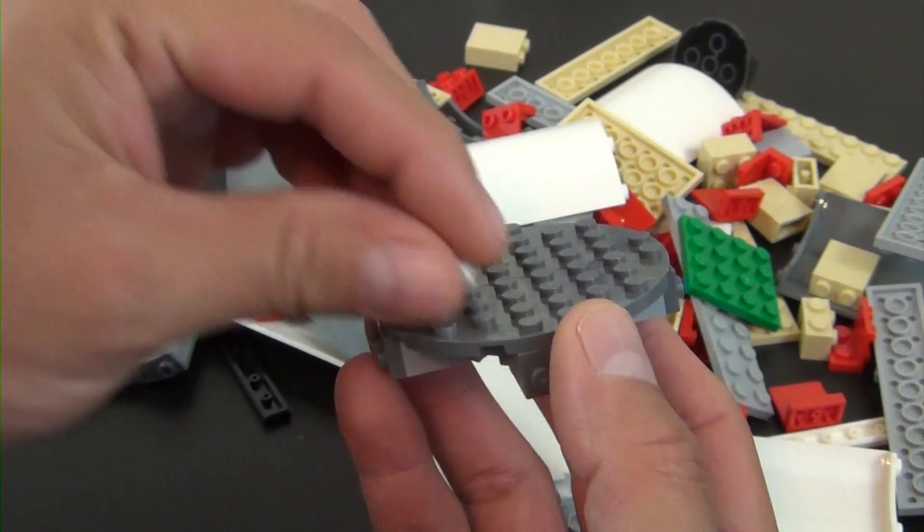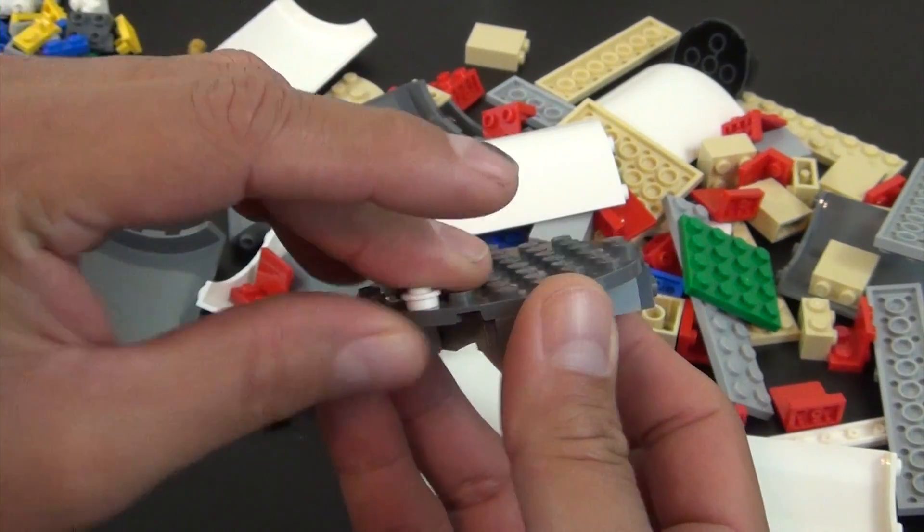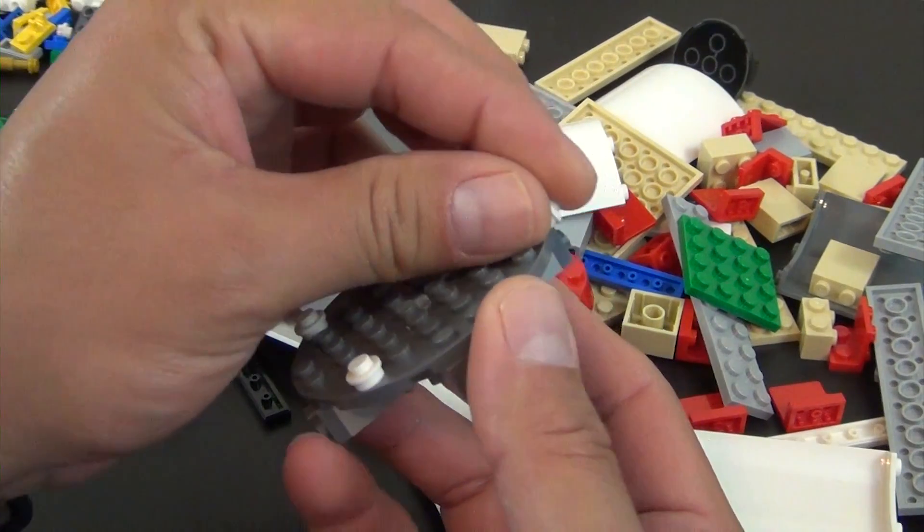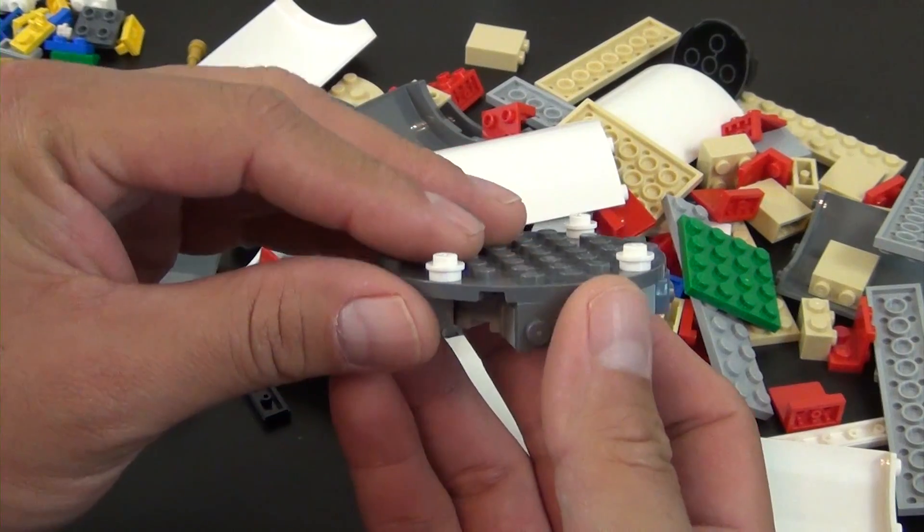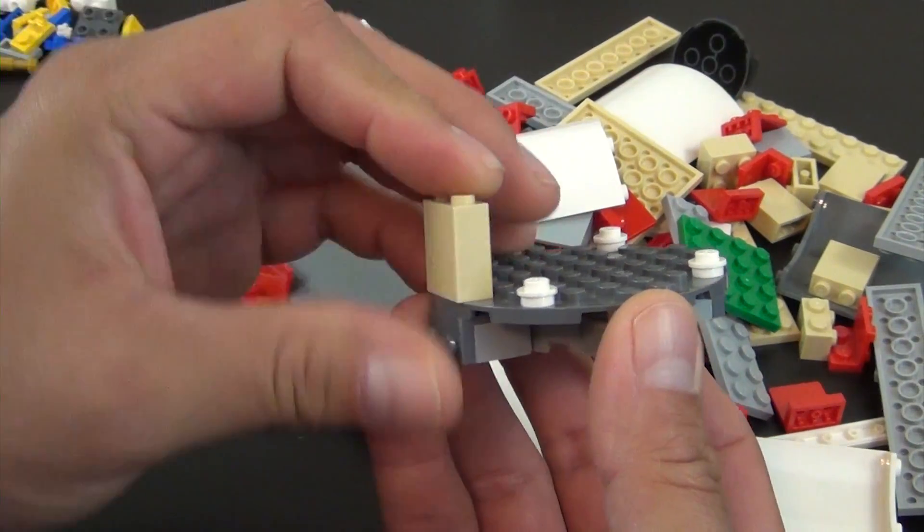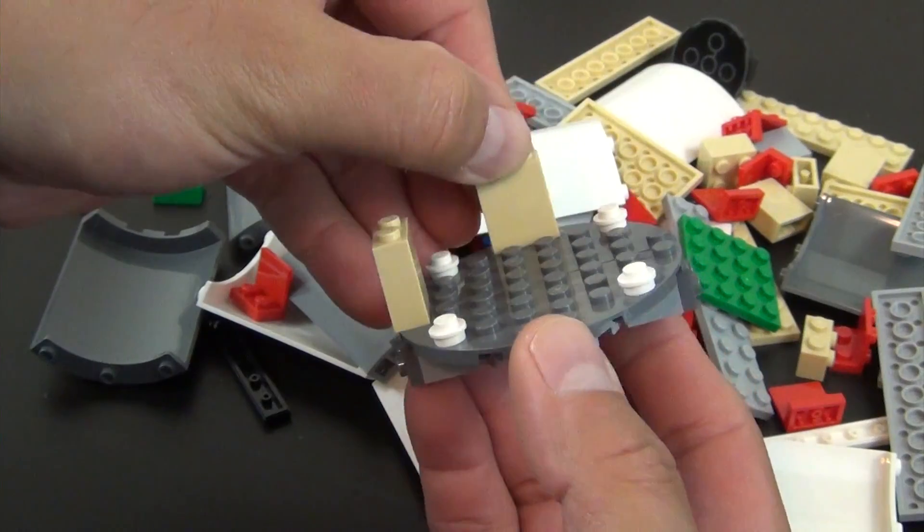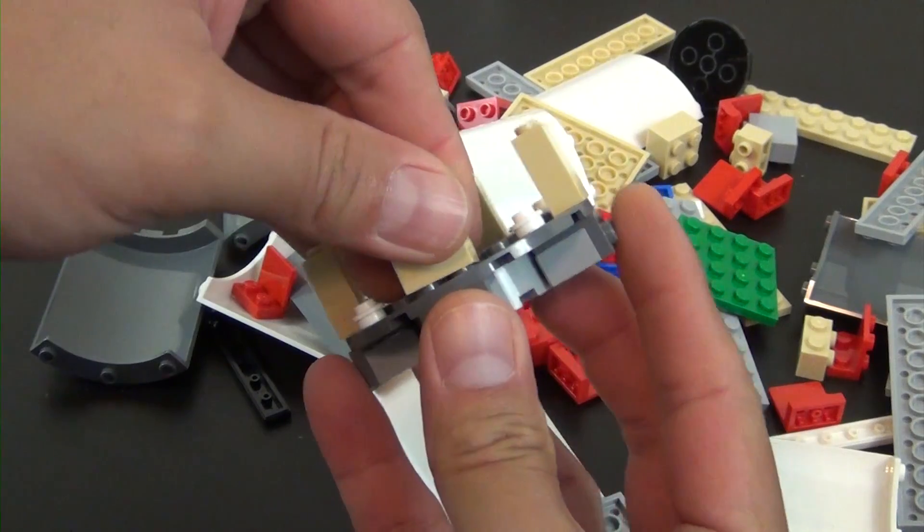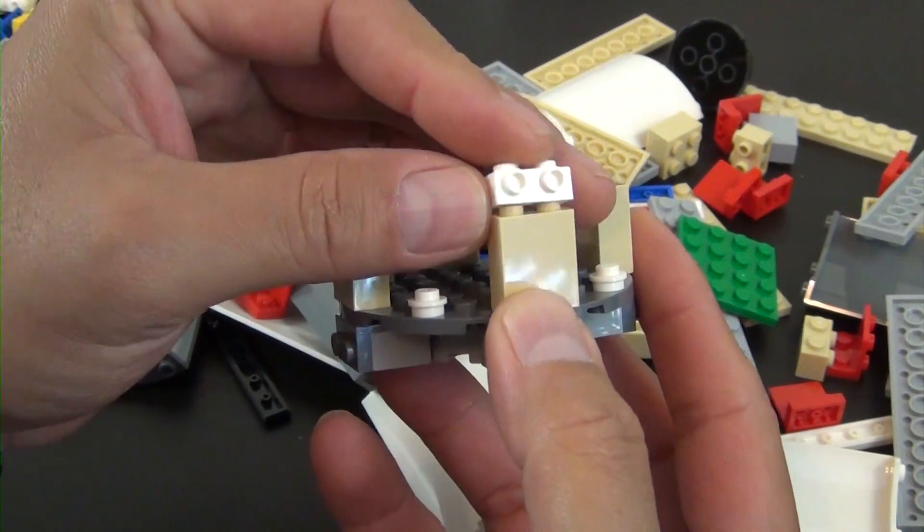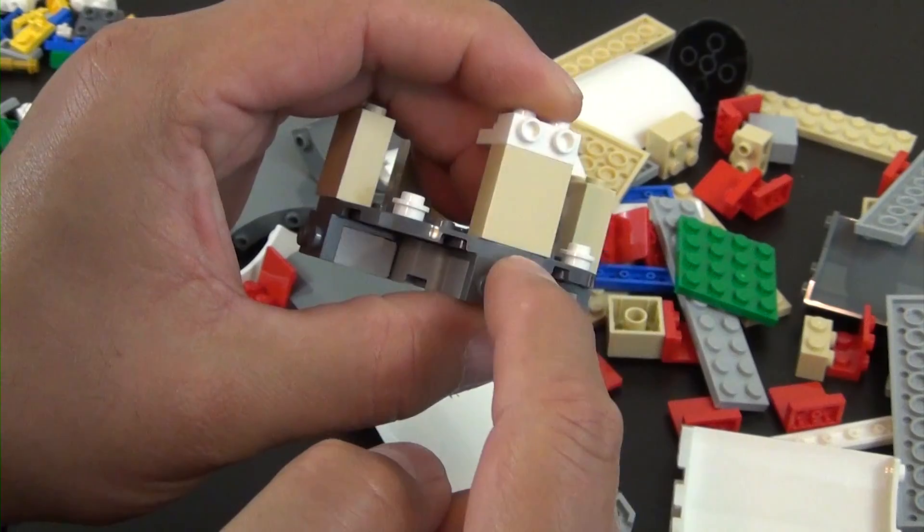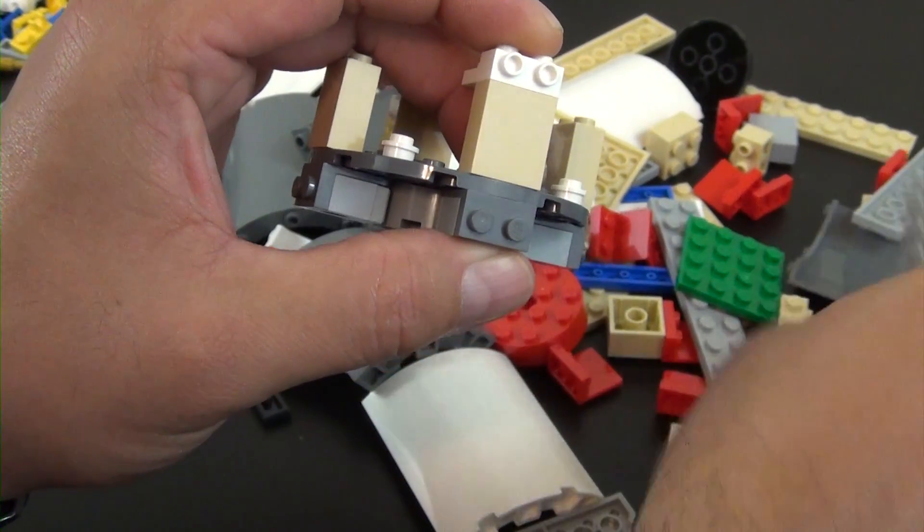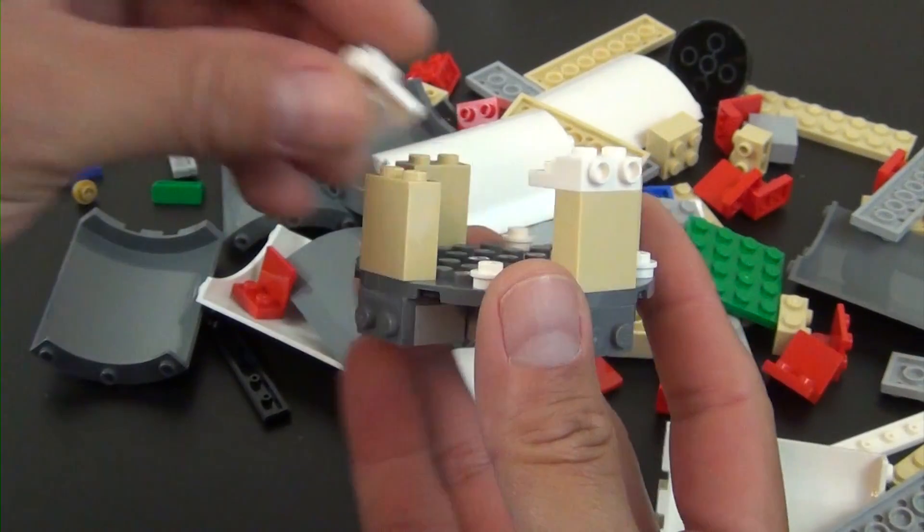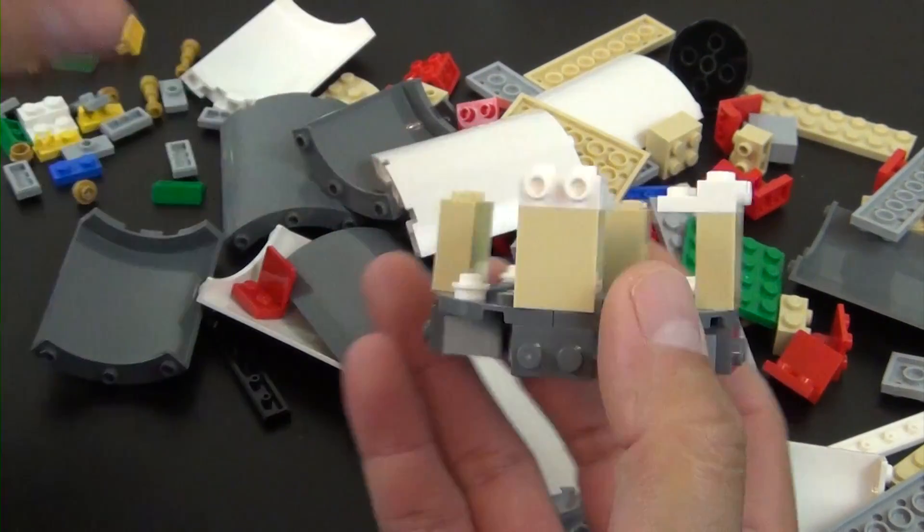So next we have four white studs, one, two, three, and four. These tall tan bricks, and then on top of the tan bricks we have this modified plate with studs on the side, so now those studs should line up perfectly.